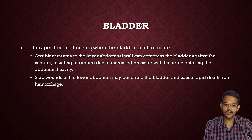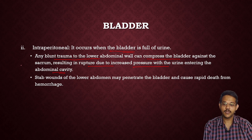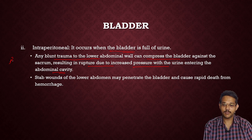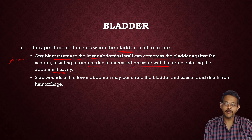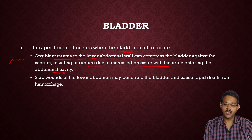Intraperitoneal rupture of the bladder occurs when the bladder is full of urine. Any blunt trauma to the abdominal wall can compress the bladder against the sacrum, resulting in rupture due to increased pressure, with urine entering the abdominal cavity. Pascal's law is applicable here as well — any blunt abdominal compression causes force to be equally transmitted, resulting in rupture and urine dispersing into the abdominal cavity.